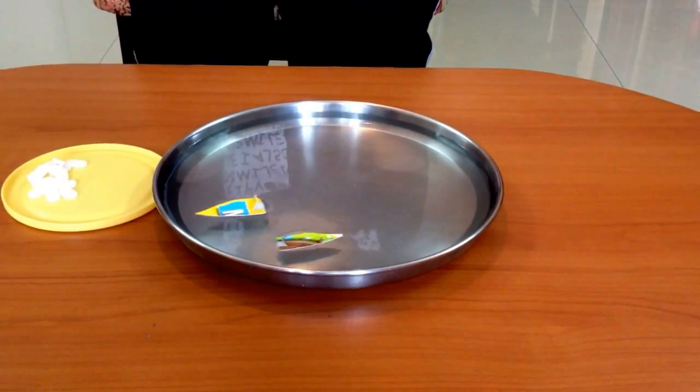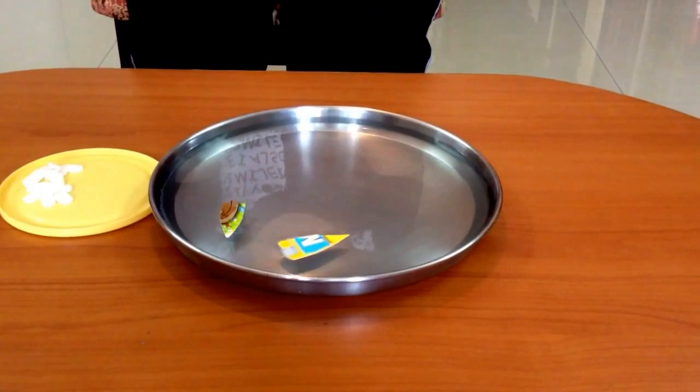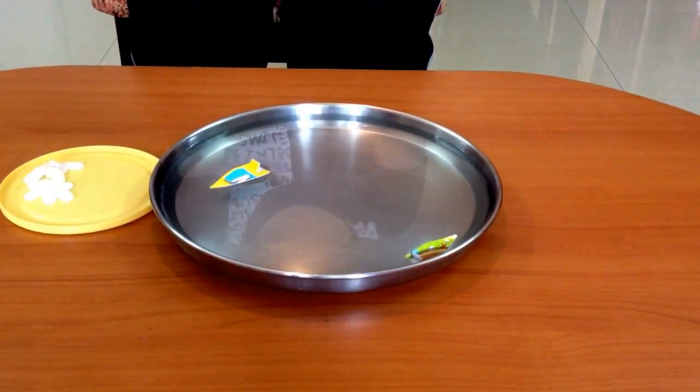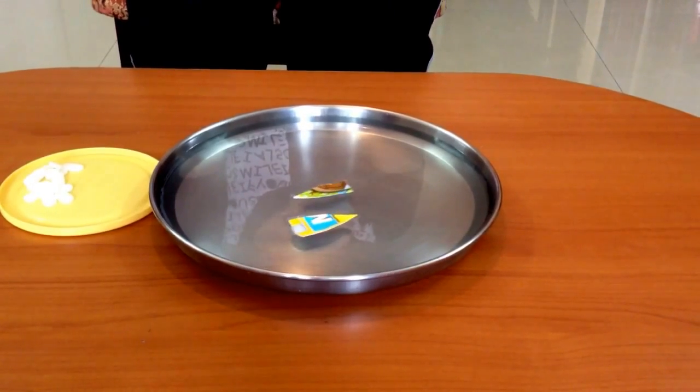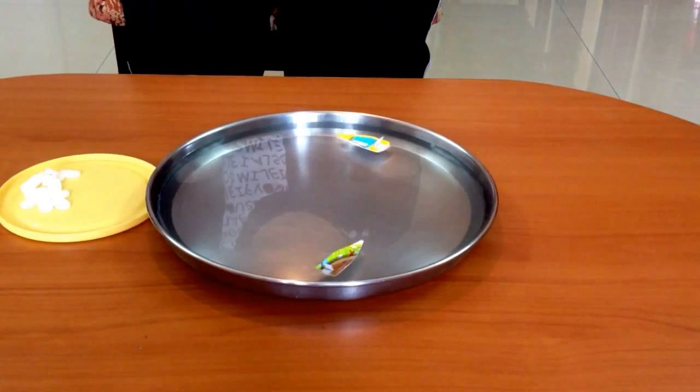Now the camphor particles are pulled from a region of lower surface tension to a region of higher surface tension. A net unbalanced force arises there and it pulls the camphor across the water which in turn propels the boat forward.